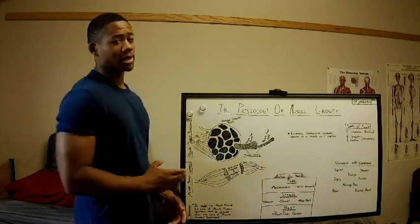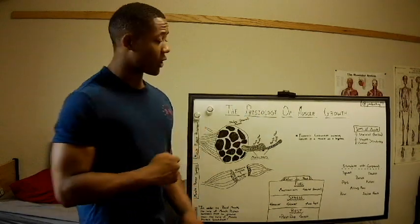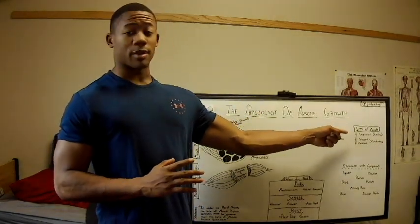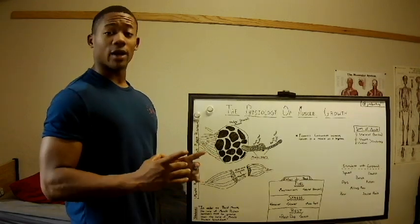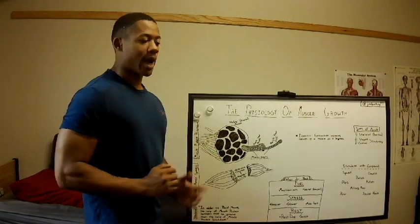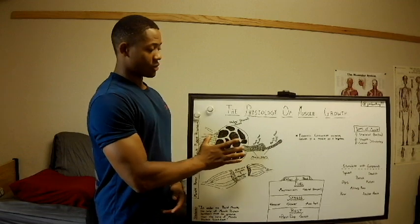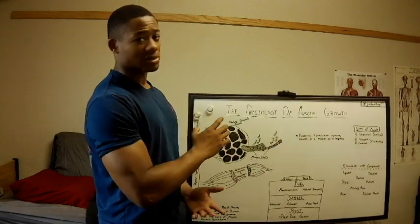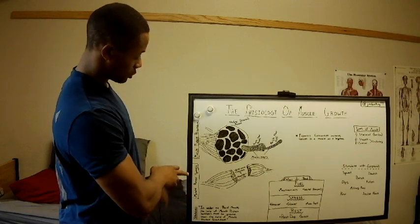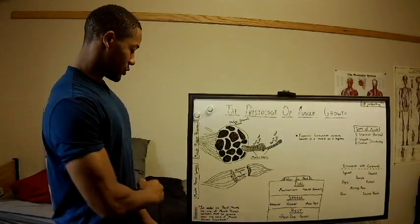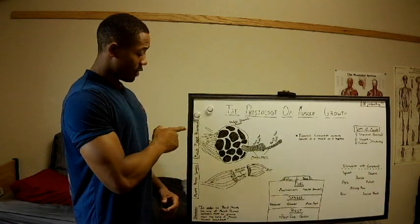Let's jump back into skeletal muscles, which is the main reason you came to this video, and the processes of making it grow. We'll cover the anatomy of skeletal muscle, eccentric and concentric contractions, compound lifts, and the fuel needed—which leads to muscle protein synthesis and muscle protein breakdown. In order to build muscle, the rate of muscle protein synthesis has to be greater than the rate of muscle protein breakdown.